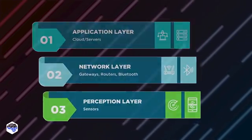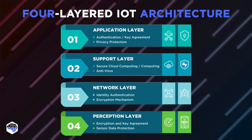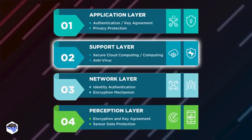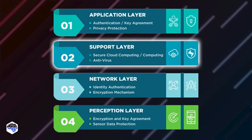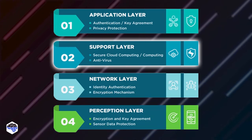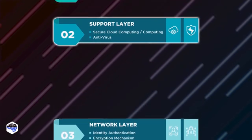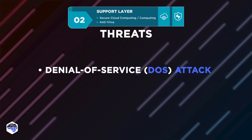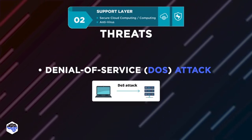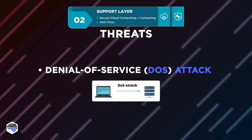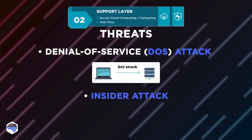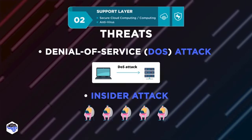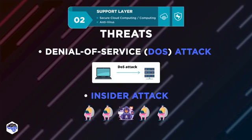Four-layered IoT architecture has one additional layer recognized as the support layer. It's placed between the network and perception layers, and verifies if the information is sent from an authenticated user. Among the most common threats in this level are a DOS attack, which requires a hacker to send a lot of requests to the network layer, and an insider attack, which requires a scammer to get the login credentials of an existing IoT system.